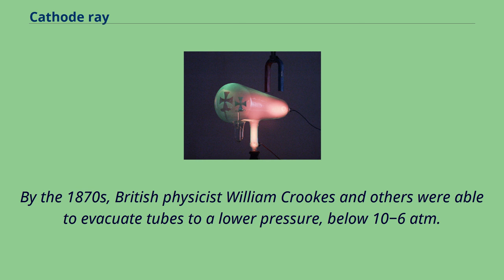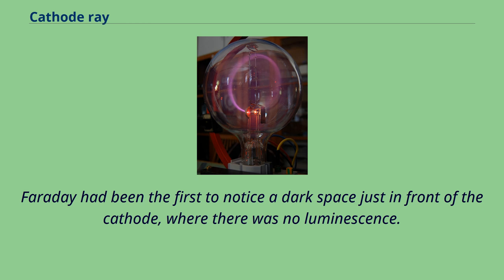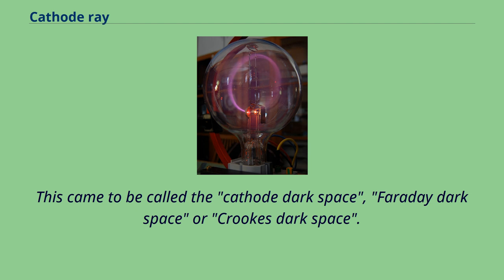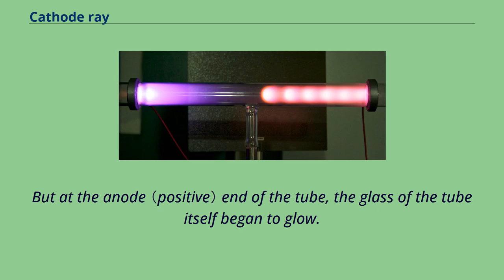By the 1870s, British physicist William Crookes and others were able to evacuate tubes to a lower pressure, below 10^-6 atmospheres. These were called Crookes tubes. Faraday had been the first to notice a dark space just in front of the cathode, where there was no luminescence. This came to be called the cathode dark space, Faraday dark space or Crookes dark space. Crookes found that as he pumped more air out of the tubes, the Faraday dark space spread down the tube from the cathode toward the anode, until the tube was totally dark. But at the anode end of the tube, the glass of the tube itself began to glow.